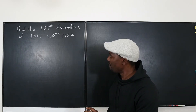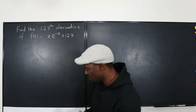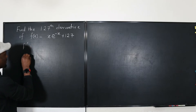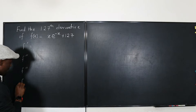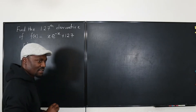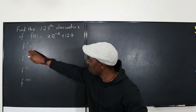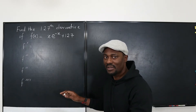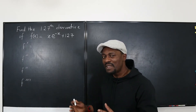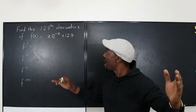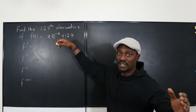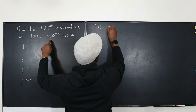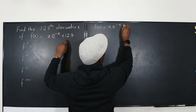So the first thing we're going to do is compute f prime, f double prime, f triple prime, and f quadruple prime — up through the fourth or fifth derivative — to see if there's a pattern we can use to predict what's going to happen at the 127th derivative. We have f of x equal to x·e^(−x) + 127.